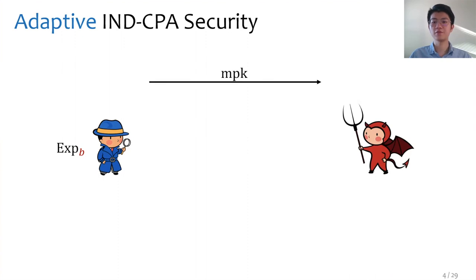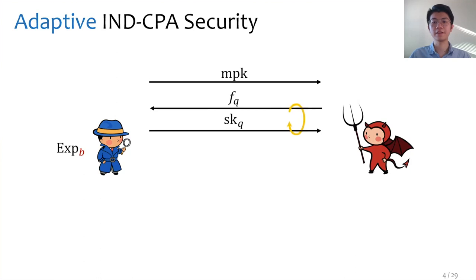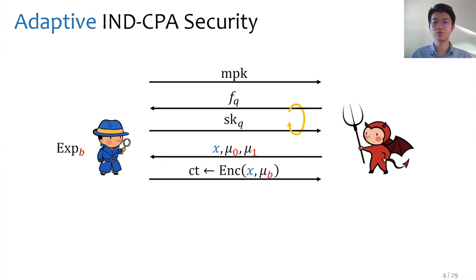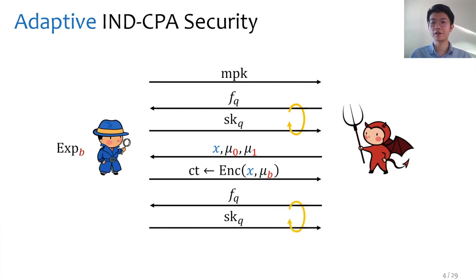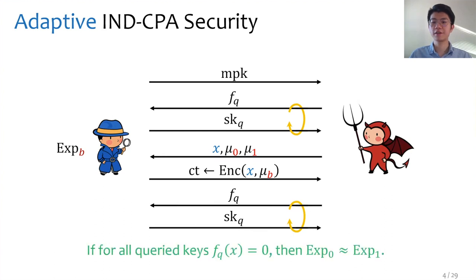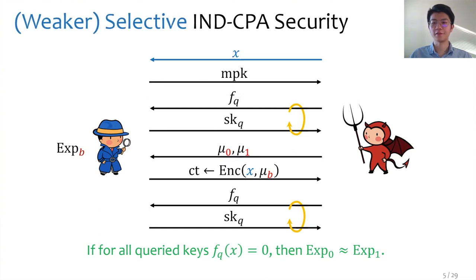The adversary can ask for secret keys of its choice; the challenger will generate them, and this can repeat as many times as the adversary wants. Then the adversary chooses an attribute x and two messages. The challenger encrypts one of the messages with the attribute x and sends the ciphertext to the adversary. Afterwards the adversary can continue to create secret keys, but cannot ask for authorized keys, and IND-CPA requires that the two experiments be indistinguishable. There is also a weaker notion called selective security, in which the adversary must commit to the attribute x at the very beginning, before it even sees the master public key. In this work, we consider the stronger adaptive security.